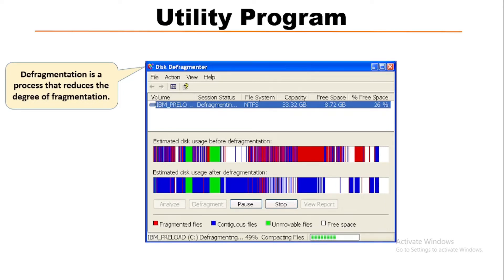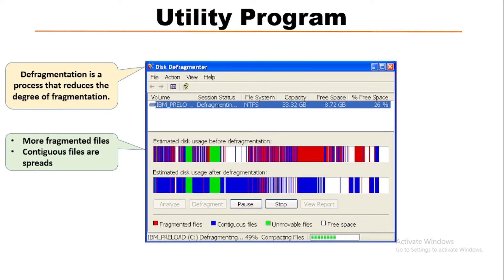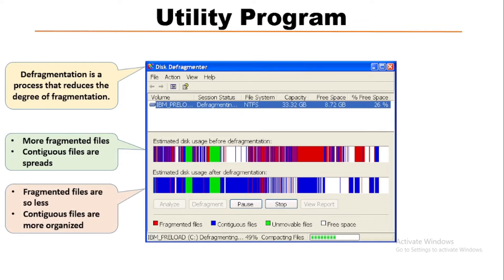This image shows two different graphical plots. The upper one is before defragmentation and the lower one is after defragmentation. Before defragmentation, more fragmented files are available and contiguous files are also spread. After defragmentation, fragmented files are fewer and contiguous files are more organized. So this is the disk defragmentation process.